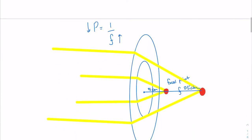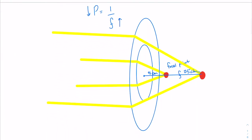Now, what is power? Power is the inverse of the focal point distance. Here I've drawn two lenses — one in the center and one just outside of it. I said this was five centimeters and that this was 25 centimeters from the center of the lens. If we have a five centimeter focal point, that's a smaller focal point distance, and 25 will obviously be larger. So if we plug in a larger number for F, we're going to get a smaller power because they're inversely related.